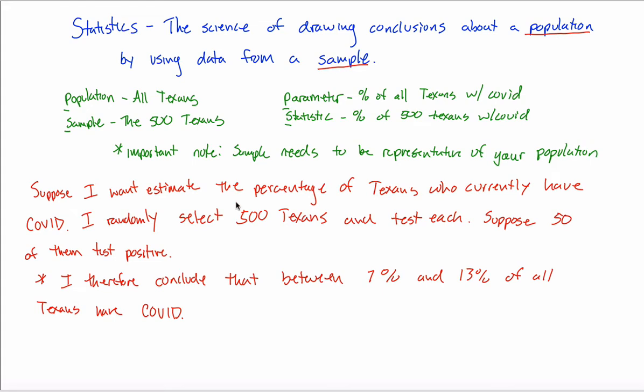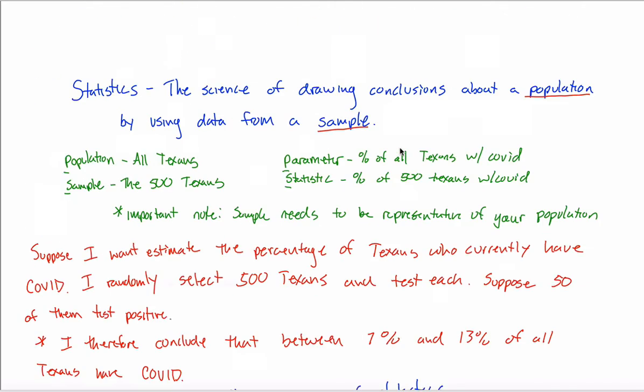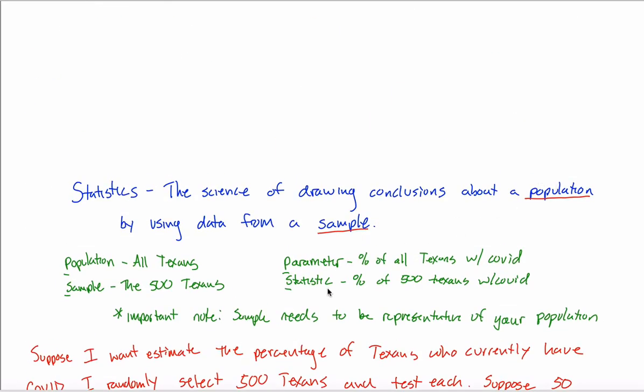But how? That's generally talking about what you do, but how do you physically go and do that? What we're going to learn about in this video is called a four-step process of statistics, which will detail how you go about answering questions about a population using data from a sample.